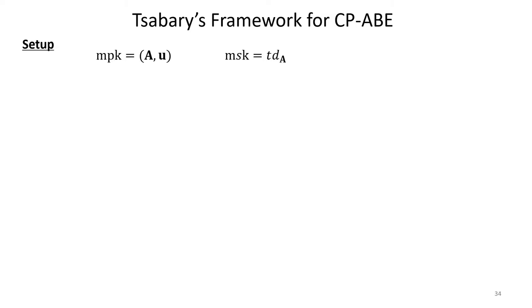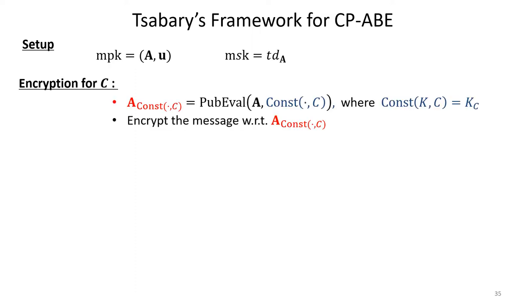Next, let me explain Sabari's framework for constructing adaptively secure CP-ABE. Since some of the details are not quite relevant when explaining our results and techniques, I only provide a very high-level description of the scheme, which is sometimes incorrect or inaccurate. In the setup, we sample random matrix A and vector U. The master secret key is a trapdoor for the matrix A. When we encrypt a message for circuit C, which specifies the policy, we evaluate the matrix A with respect to constraining circuits with input C. This circuit is hardwired with a circuit C and takes as input a PRF key K and outputs a constrained key K_C. Then we encrypt the message with respect to the obtained matrix.